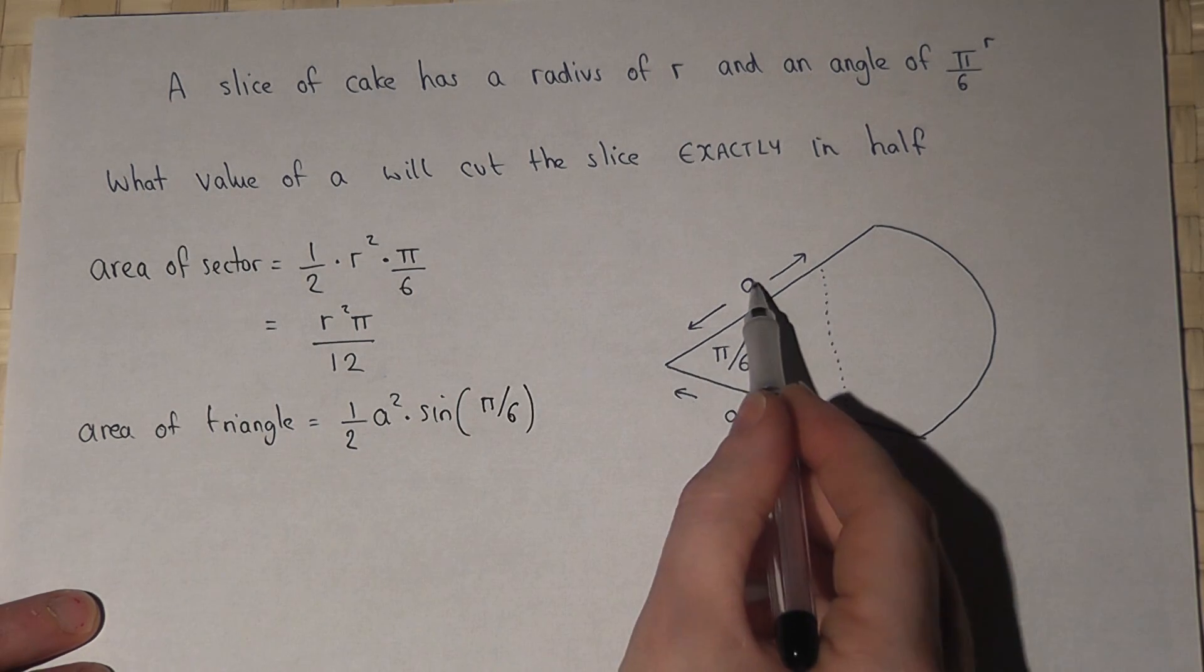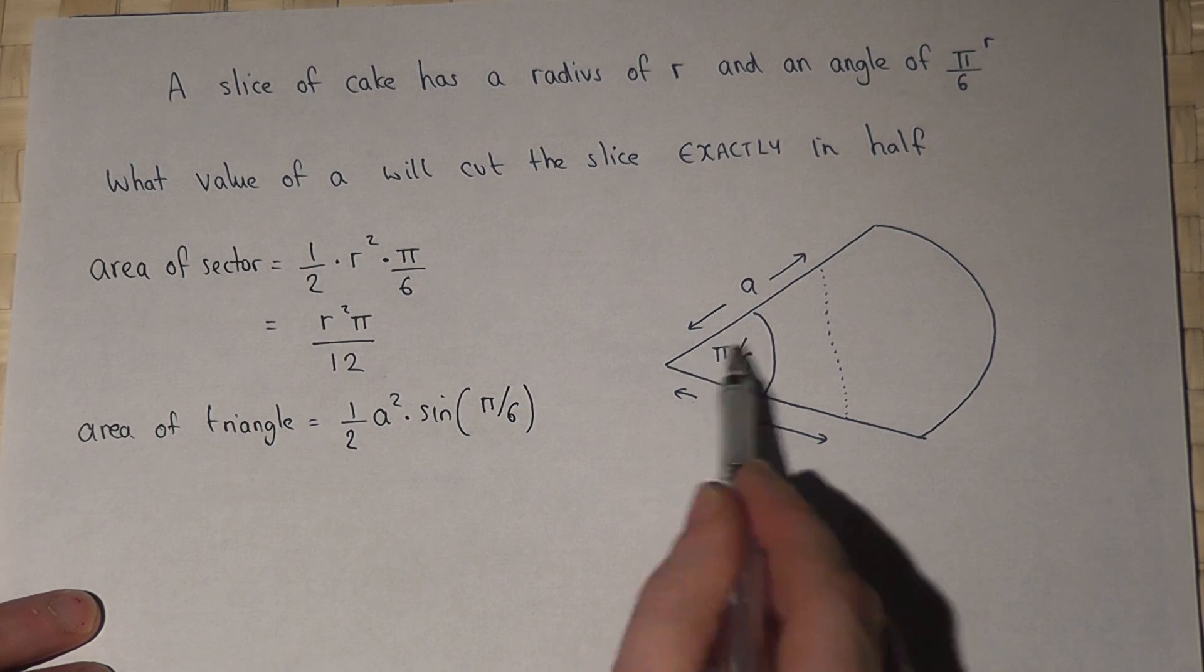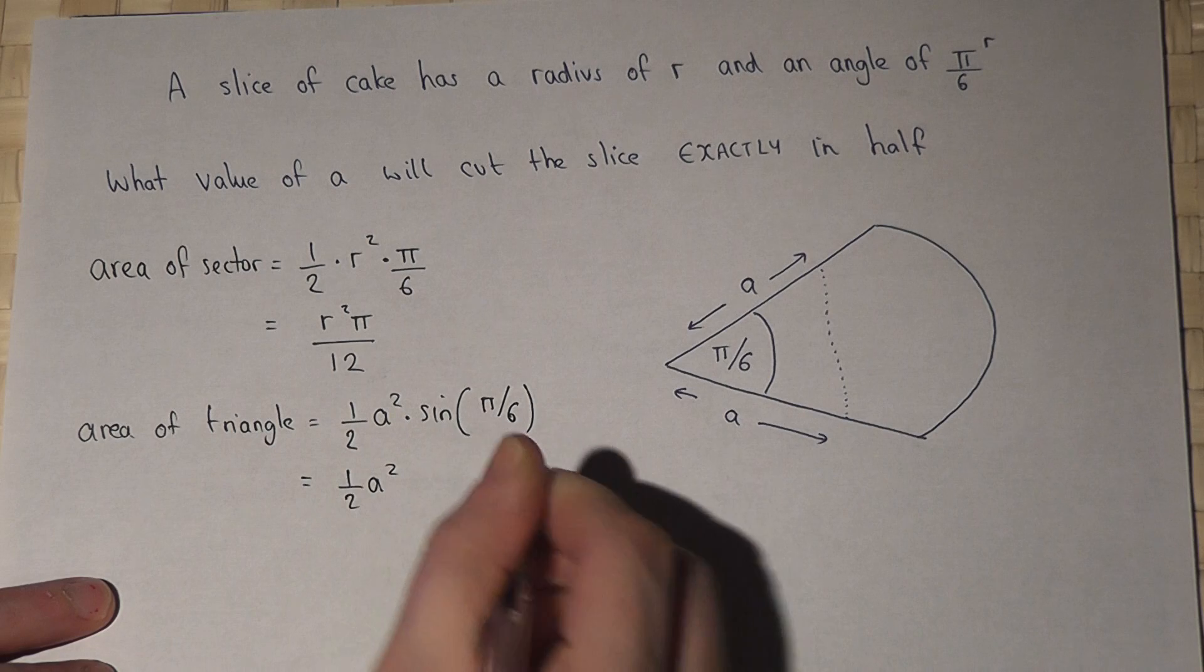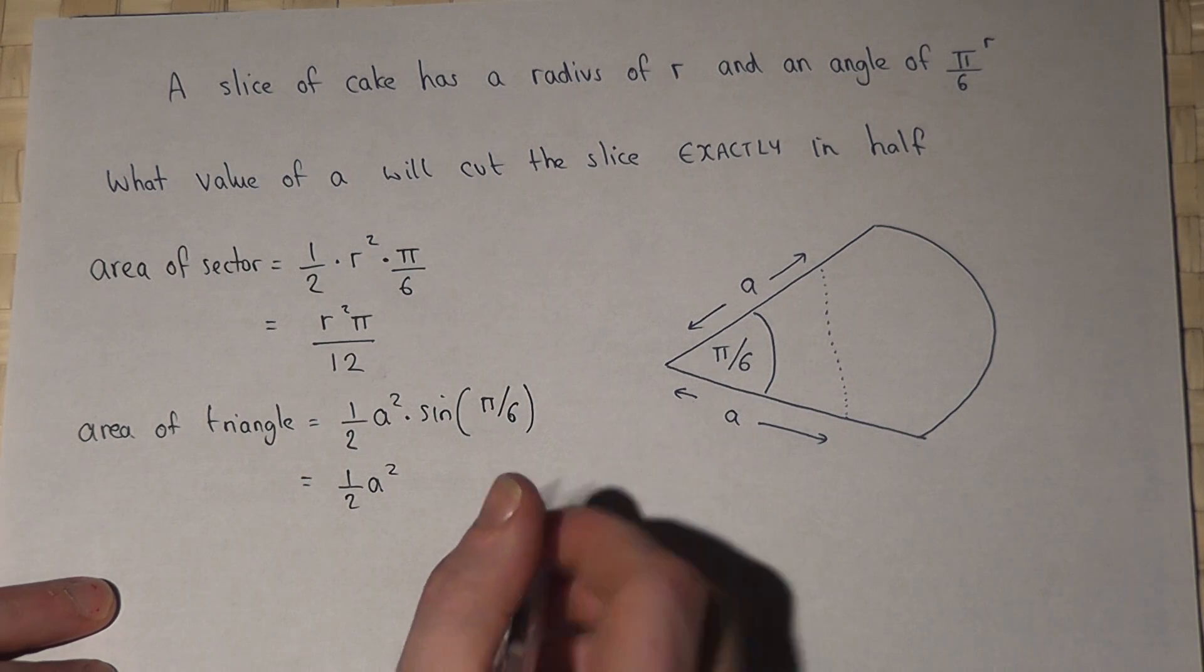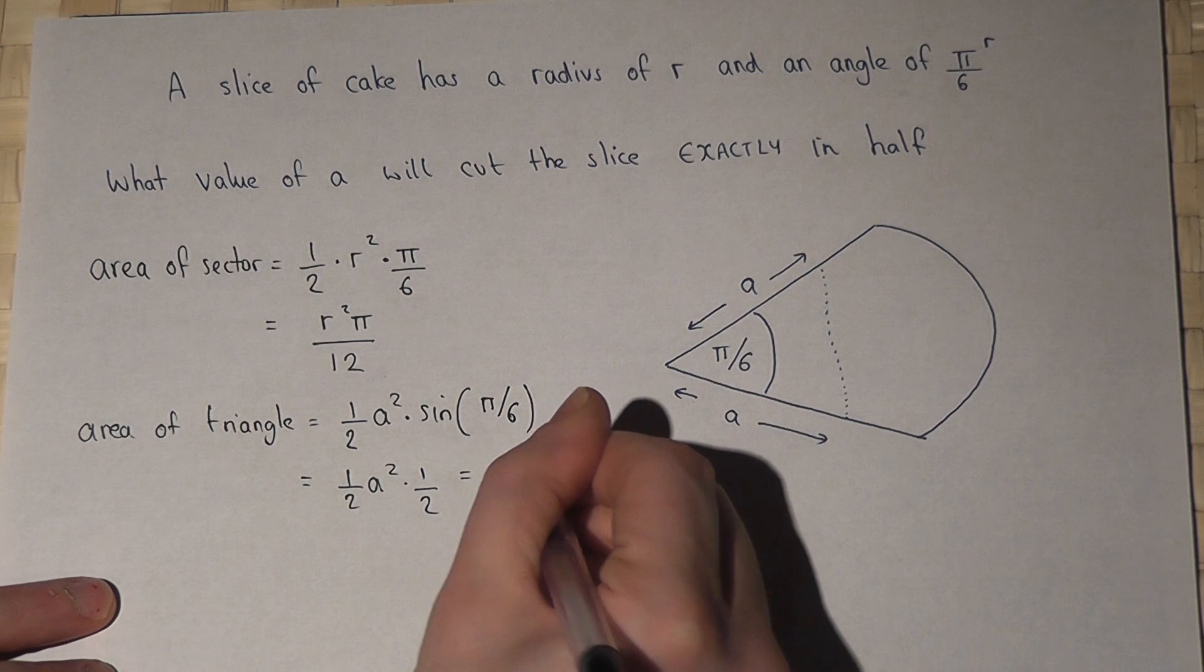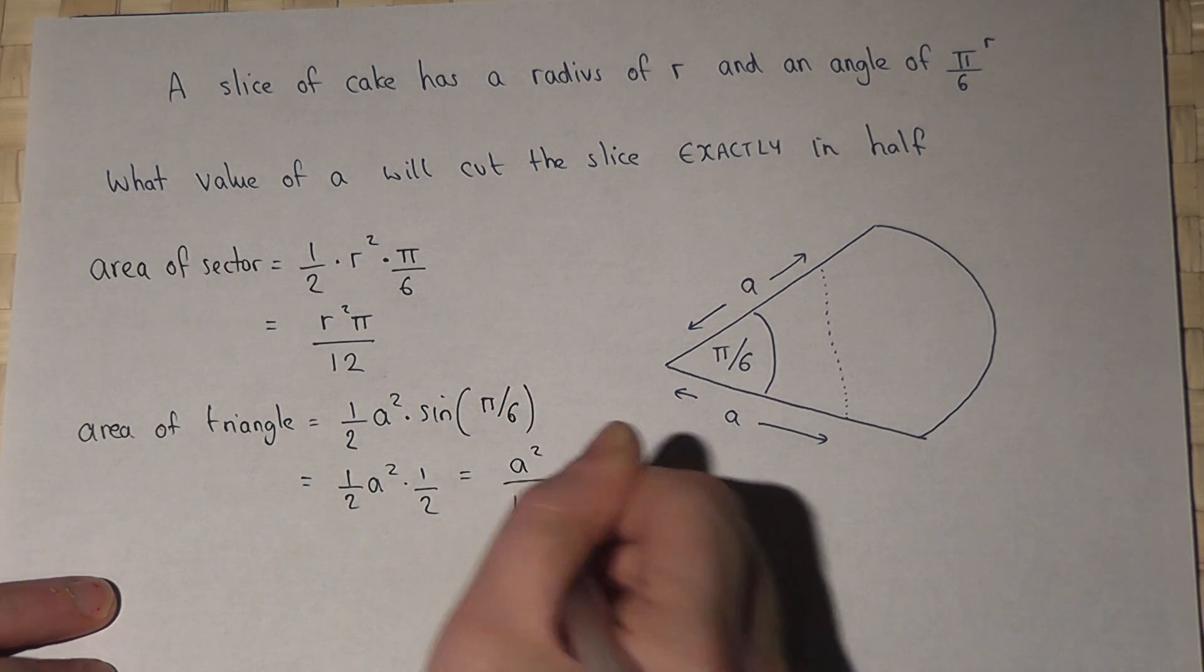It's a half that times that times sine of the angle and sine of pi over 6 is a half so this equals A squared over 4.